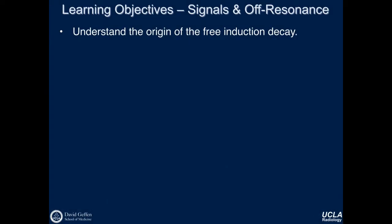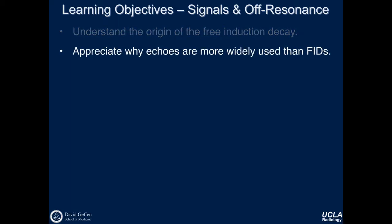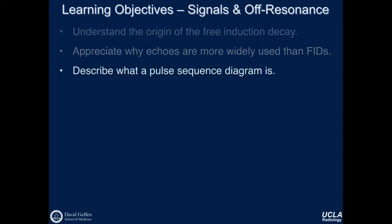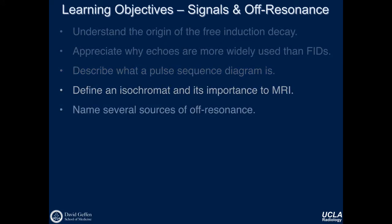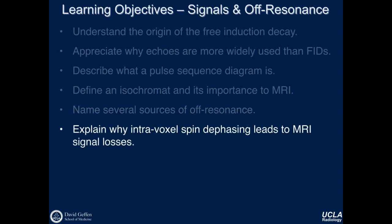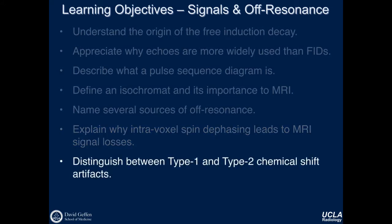At the end of this module, you should reach the following learning objectives: to understand the origin of the free induction decay; to appreciate why echoes are more widely used than FIDs; to describe what a pulse sequence diagram is; to define an isochromat and its importance to MRI; to name several sources of off-resonance; to explain why intravoxel spin dephasing leads to MRI signal losses; and to distinguish between type 1 and type 2 chemical shift artifacts.